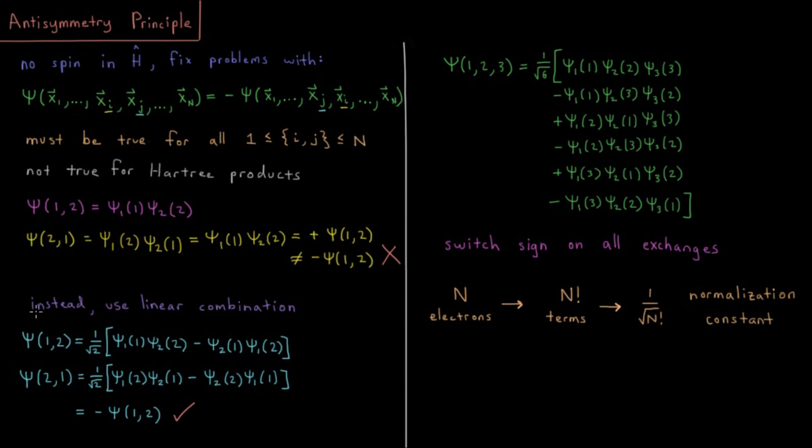So instead what we can use is an antisymmetric linear combination. We can use a wave function where we have equal probability of electron 1 being in wave function 1 and electron 2 being in wave function 2 as the reverse: electron 1 in wave function 2 and electron 2 in wave function 1, or I might call these orbitals to be more clear. And there's an opposite sign there. We also have a normalization constant, because when we multiply ψ* times ψ and integrate, this should equal 1. And we end up getting two terms which don't cancel in that case.